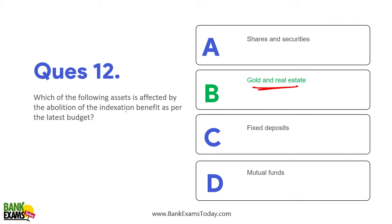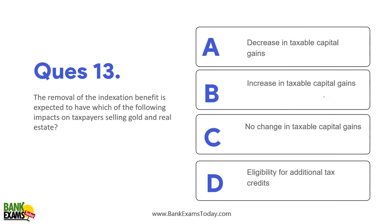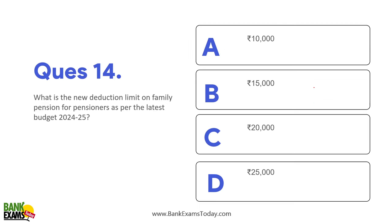Which assets are affected by abolition of indexation benefit? On gold and real estate, you are not going to get indexation benefit. The capital gains tax on real estate has been reduced — it used to be 20% but now it has been reduced to 12.5%. The removal of indexation benefit is expected to result in an increase in taxable capital gains for taxpayers selling gold and real estate.